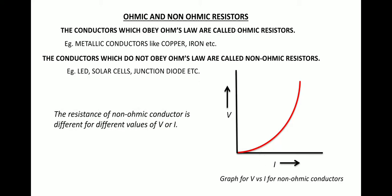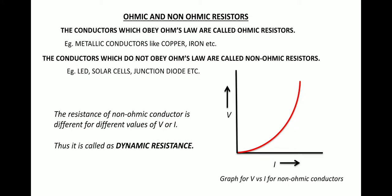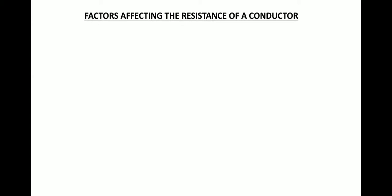The resistance of a non-ohmic conductor is different for different values of V or I. Compared to the ohmic graph — which is a straight line with constant resistance — the non-ohmic graph shows that resistance is not constant; it differs as current and voltage increase. Since the resistance does not remain fixed, non-ohmic conductors are also known as dynamic resistance.